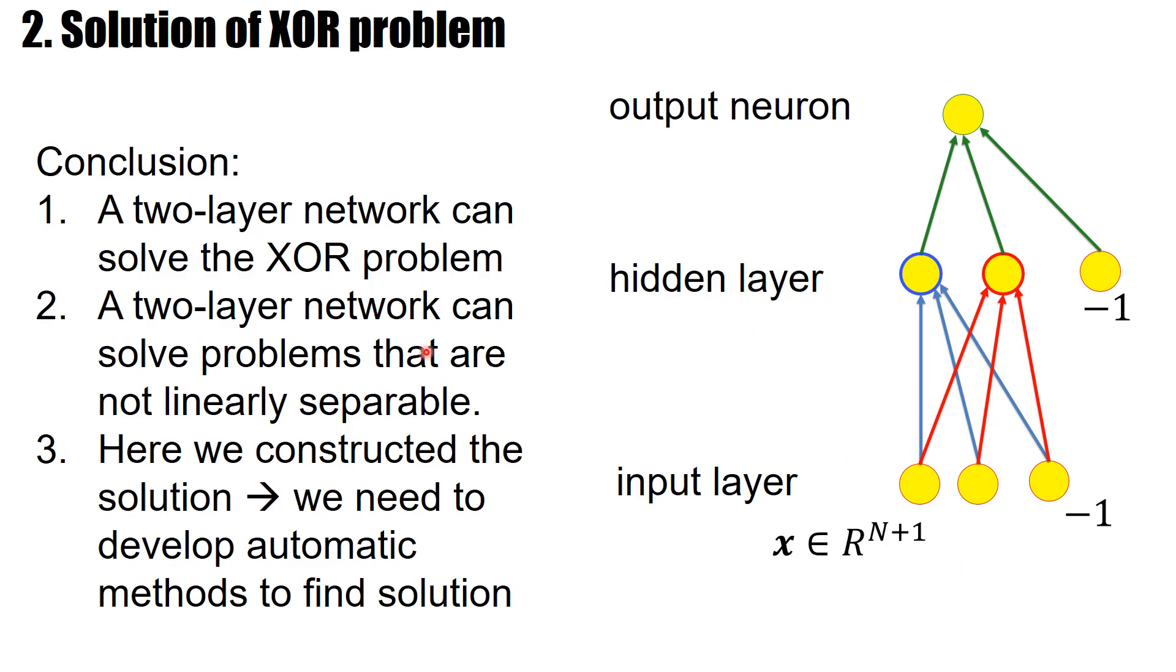In conclusion, a two-layer network can solve the XOR problem. In fact, a two-layer network can solve all sorts of non-linearly separable problems. In this part, we constructed a solution. However, the aim of neural networks of machine learning is to have automatic methods to find the solutions. And this is the topic of the next part.